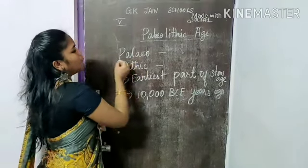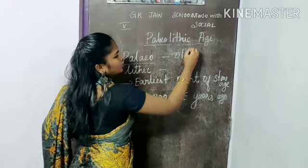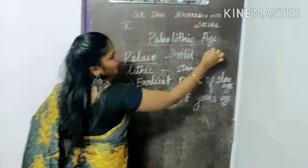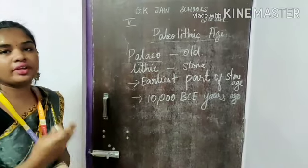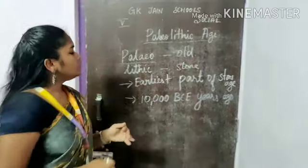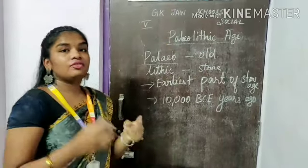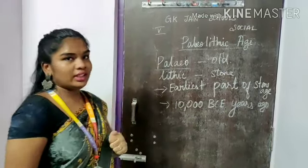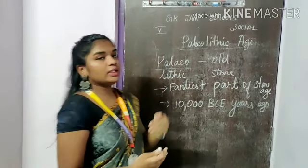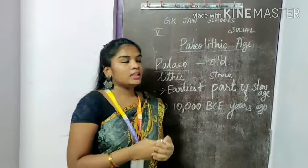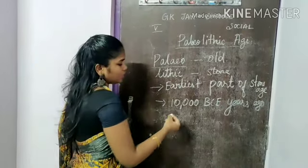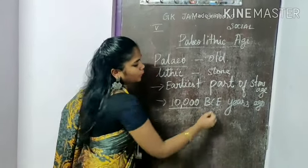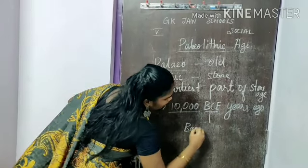The word Paleo means old and Lithic means stone. So Paleolithic age is the old stone age. It can also be referred to as old stone age. Paleolithic age is the first stage of stone age — the earliest part of the stone age. In Paleolithic age, the early humans used stones. This is the beginning of the stone age. It started 10,000 BCE years ago.